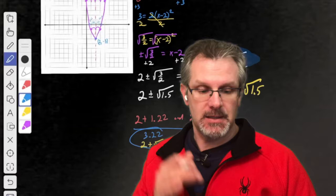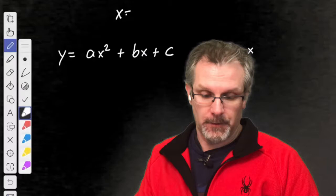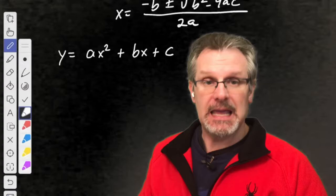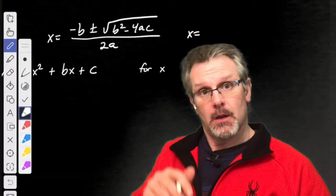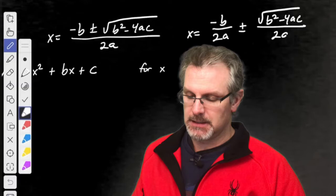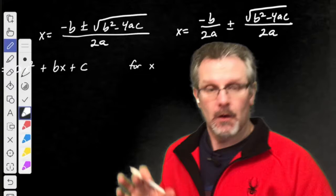I know many of you already know the quadratic formula as x equals the opposite of b plus or minus the square root of b squared minus 4ac all over 2a. We can also split it up and say x equals the opposite of b over 2a plus or minus the square root of b squared minus 4ac over 2a. Both of those are correct.